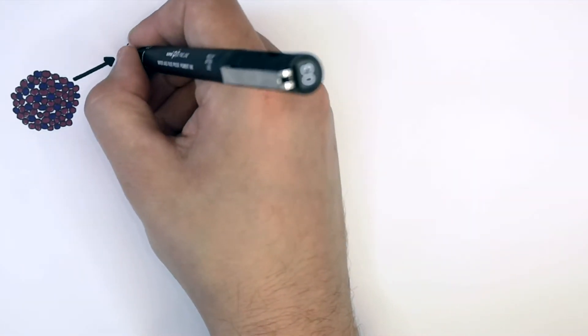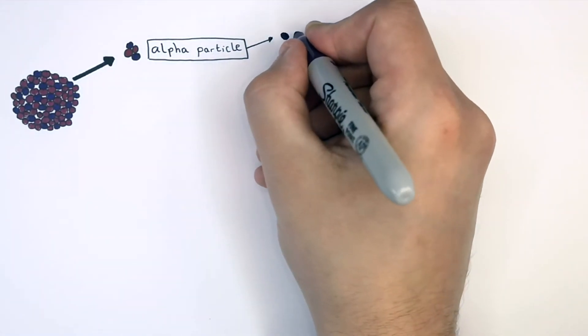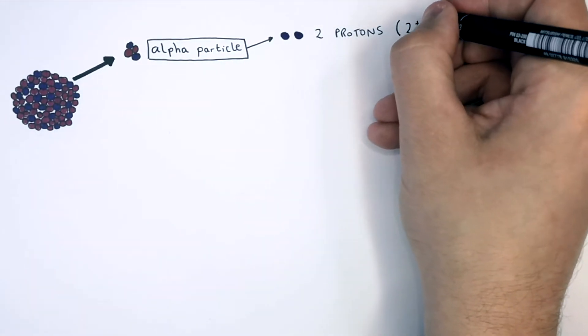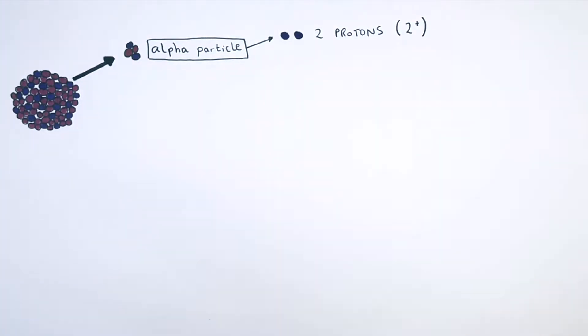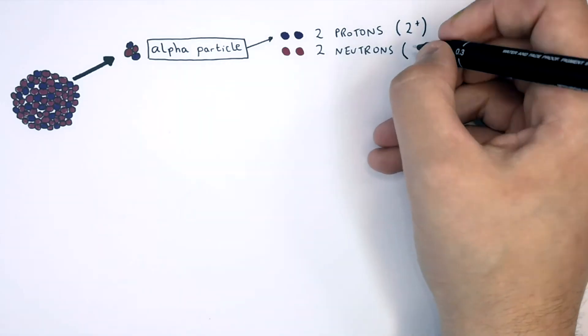As you can see here, I'm drawing two protons, two neutrons, but no electrons. So remember, an alpha particle equals a particle with two protons, which have a charge of two plus, and two neutrons. These two neutrons have a charge of zero.